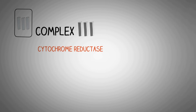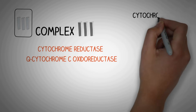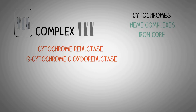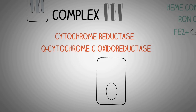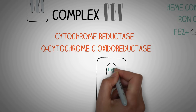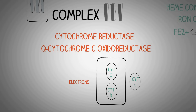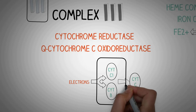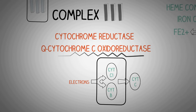Complex 3 of the electron transport chain is called cytochrome reductase, also known as Q-cytochrome C oxidoreductase. Cytochromes are a group of proteins which have heme as their prosthetic groups, and they contain an iron core which can exist in an oxidized or reduced form depending on the electrons it has. Complex 3 contains three types of cytochromes: cytochrome B, cytochrome C1, and cytochrome C. Its main job is to accept electrons and transport them to cytochrome C, which then transports them to complex 4.